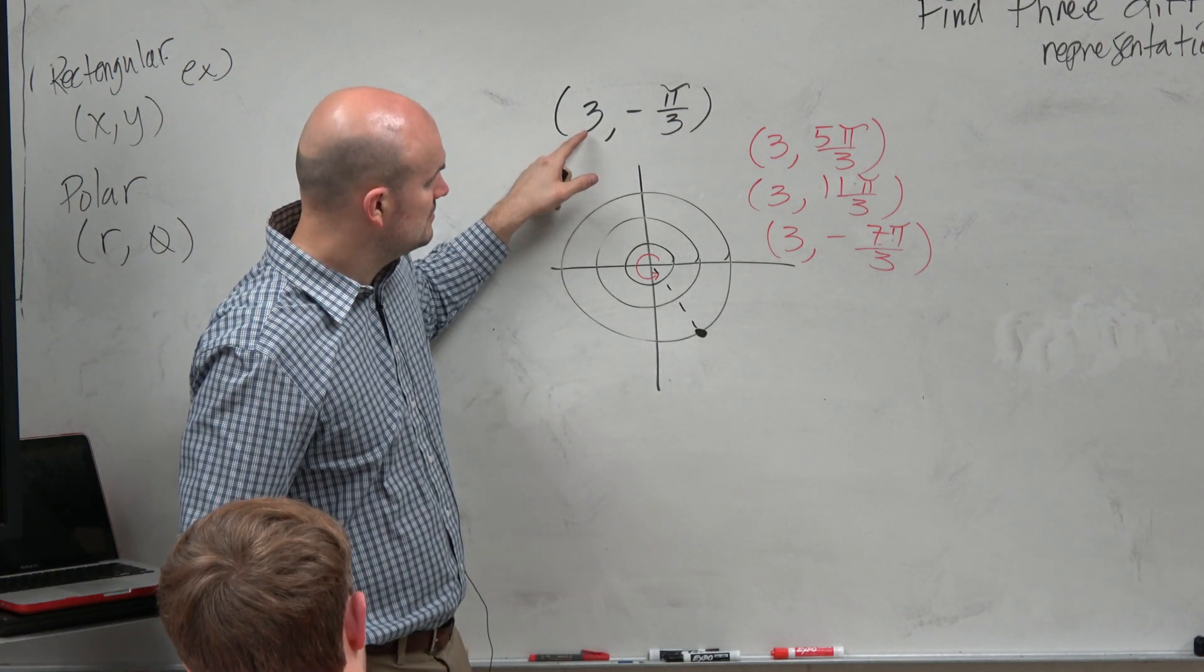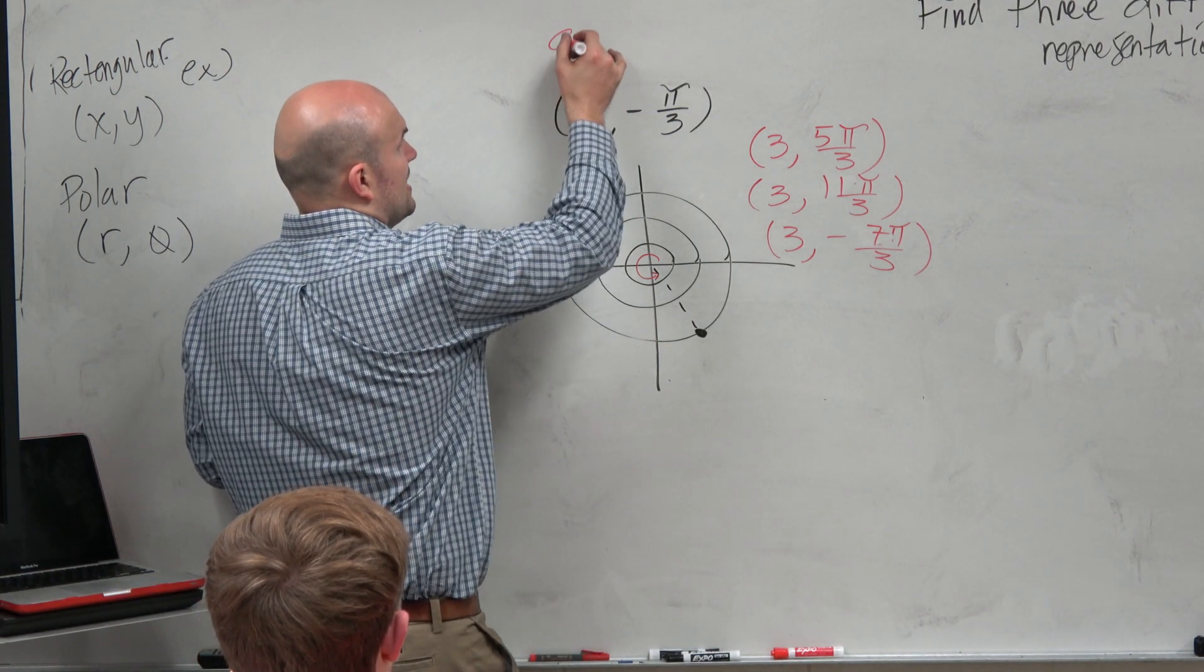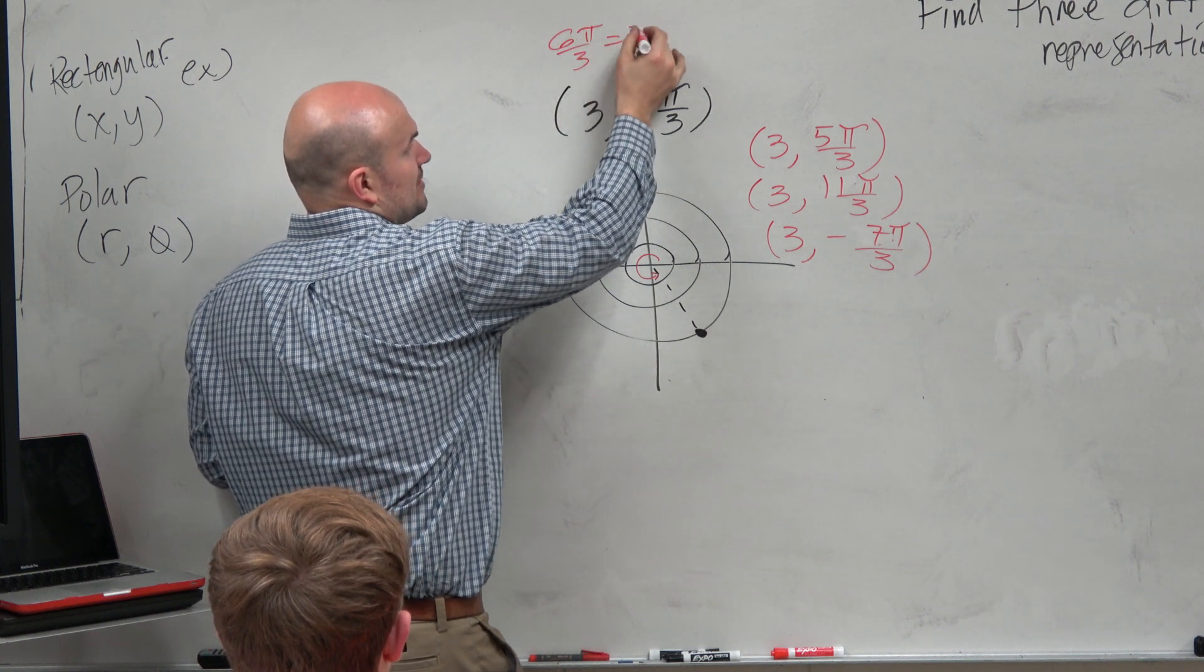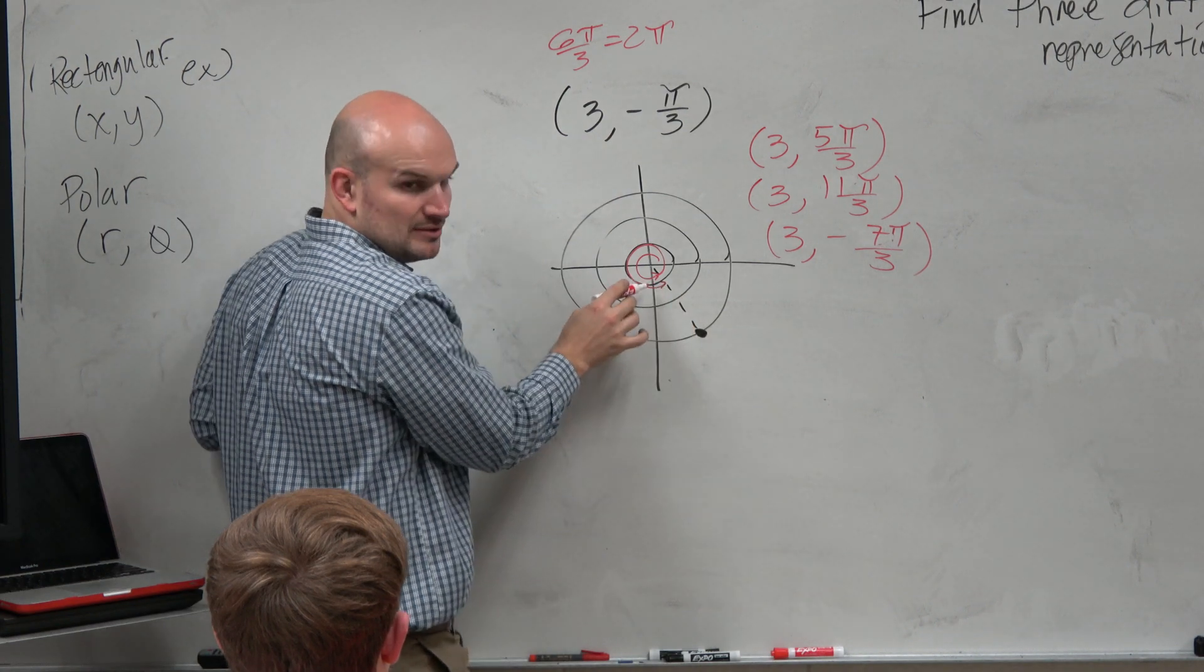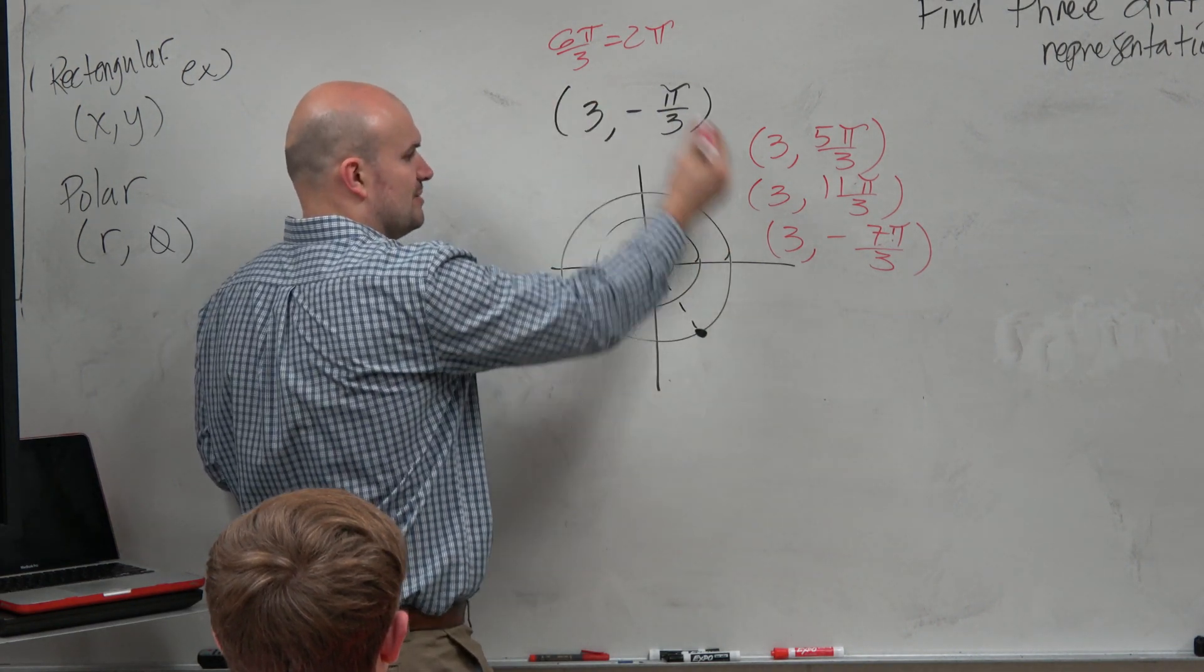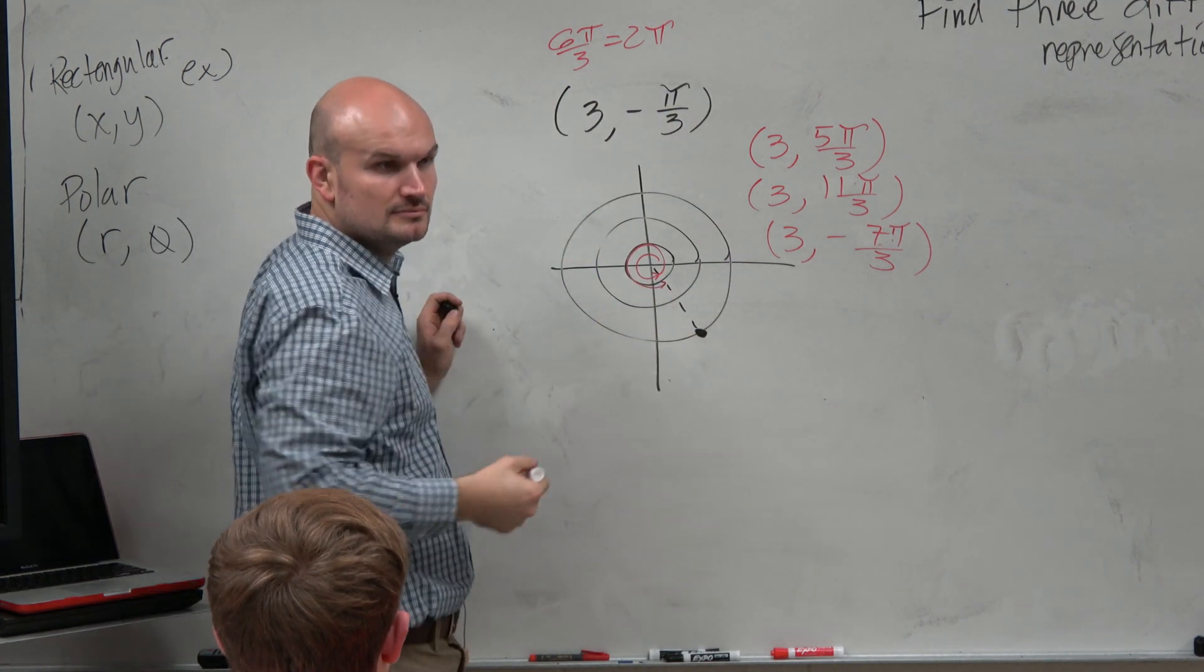Why did you jump 6? Because 6 pi over 3 is equal to 2 pi. Here's the angle. If you just add 2 pi to it, you just go back to the same angle. Or if you subtract 2 pi, you're just going around the circle. Right?